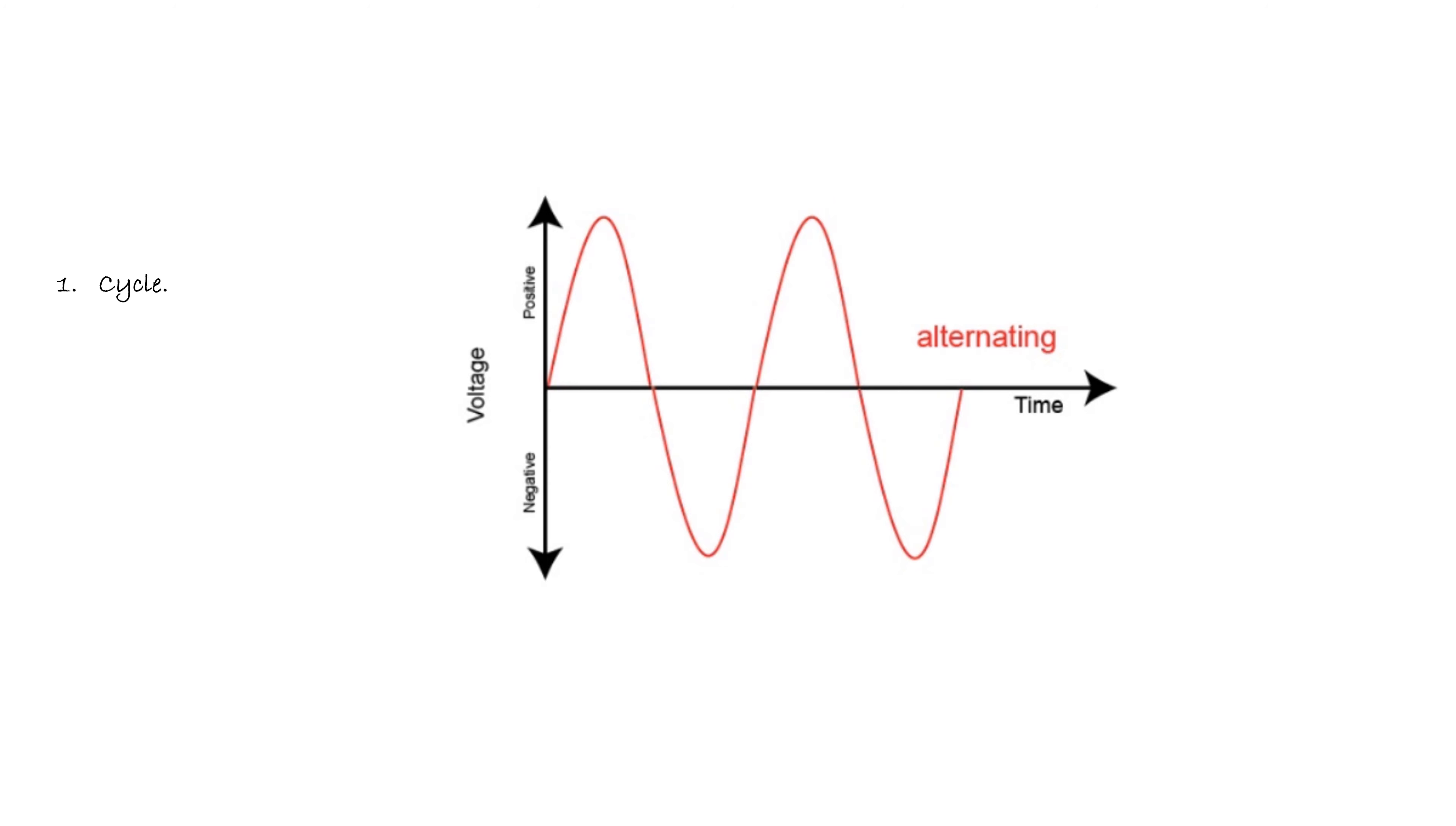Cycle means one complete set consisting of all positive and all negative values of an alternating quantity. Here this is a positive half cycle and this is the negative half cycle. The collective set of all positive and negative values of an alternating quantity is called a cycle.